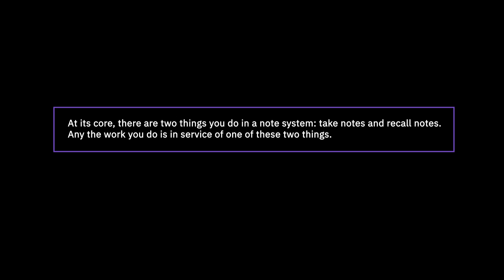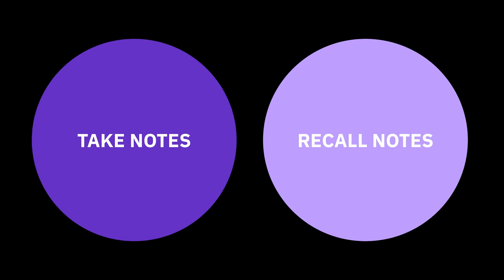At its core, there are two things you do in a note system: take notes and recall notes. Any work that you do is in service of one of these two things. It's easy to get distracted by the fancy functionality of tools like Obsidian, but just keep in mind whether what you are doing is helping you take notes better or helping you recall notes better. Building systems, templates, and automations are all in service of helping you take notes faster or helping you recall them.